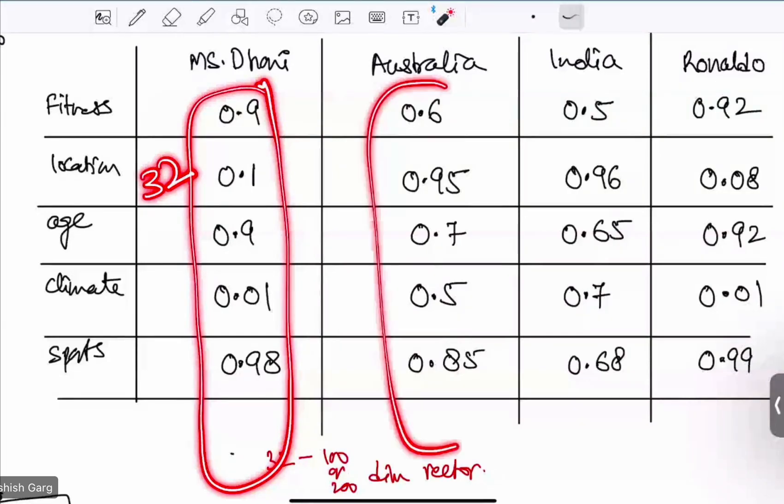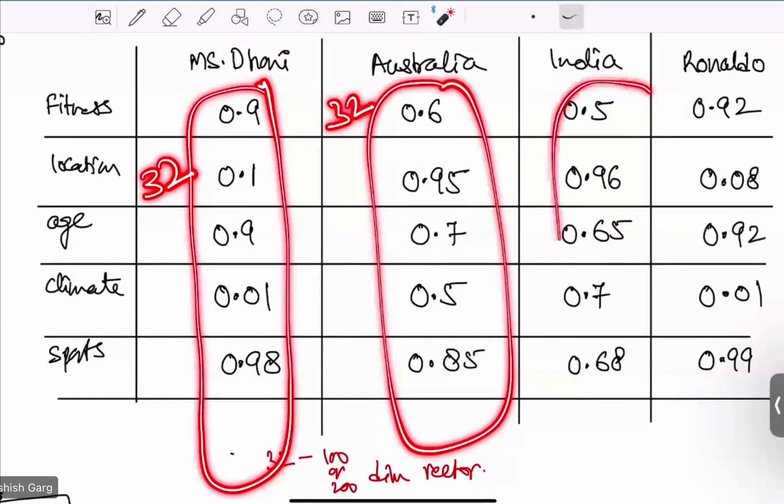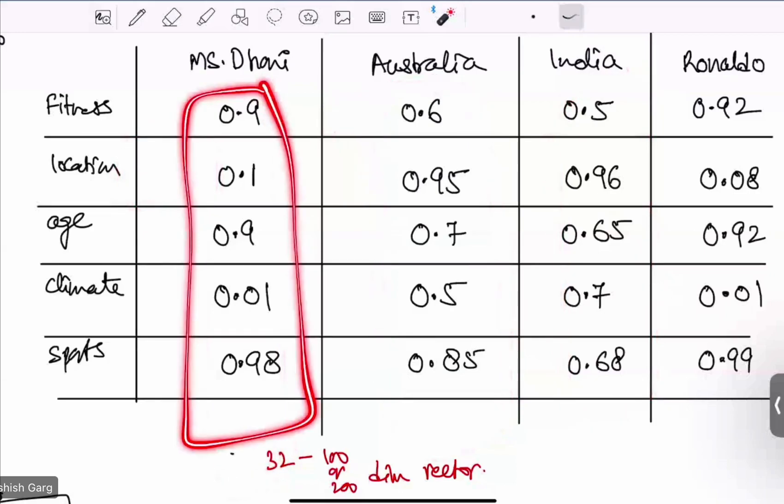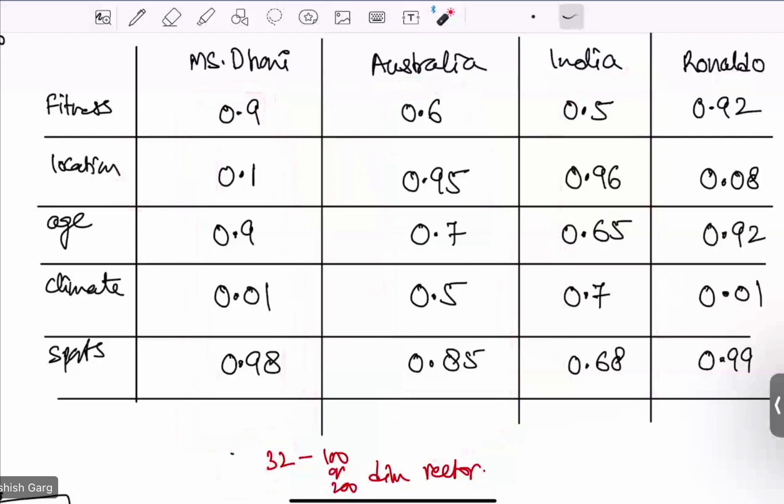For this also, it will be 32 dimension. For every word, it will be of same dimension. If it is 100 dimension for one word, then for every other word, it will be of 100 dimension.